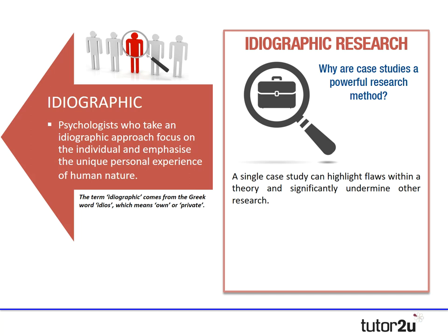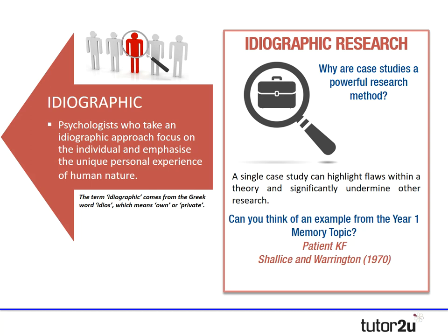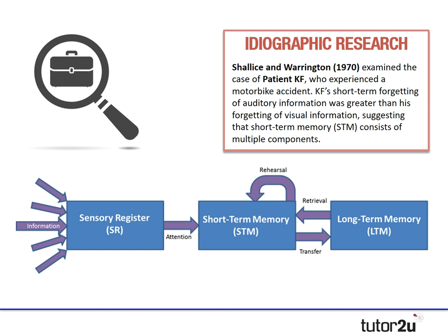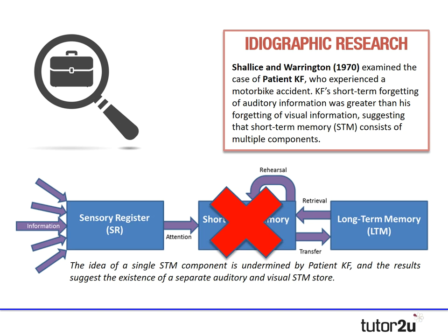If we think back to year one and the memory topic, you may have encountered patient KF, written up by Shallice and Warrington. They examined the case of patient KF, a man who had experienced a motorbike accident. His short-term forgetting of auditory information was much more significant than his forgetting of visual information, which suggested that short-term memory must consist of multiple components — likely one for visual and one for auditory information. The case of patient KF, an ideographic piece of research, completely undermined the multi-store model of memory by Atkinson and Shiffrin, suggesting there isn't just one short-term memory component but multiple. So ideographic research is really powerful because a single case study can highlight a major limitation within a whole area of research.